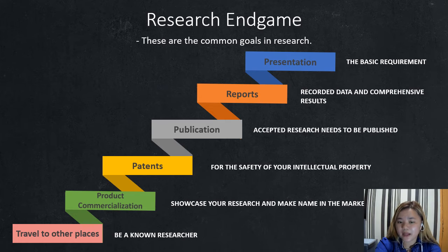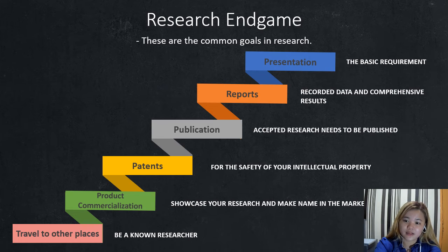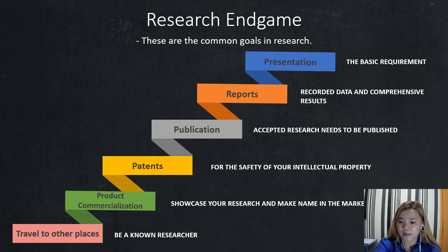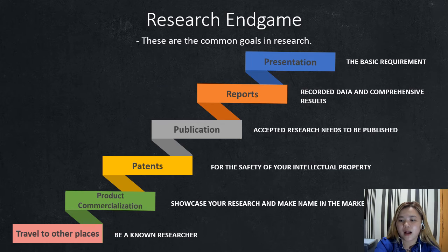In publication, you want your paper to be published because your name is on it — you want your name to be known publicly. It is a common goal to have a published research paper. Next are Patents. Since you have published your journal or research paper, you want to have a patent. If you have a patent, you have security in your intellectual property and the right to take action against someone who uses your research paper without your consent.